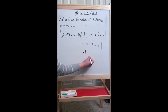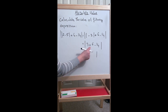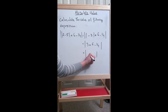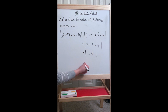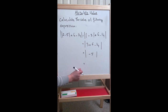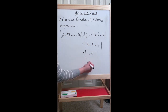We keep the outer absolute value and calculate the inside: 3 plus 6 is 9, minus 14 gives -5. Since -5 is negative, we take the absolute value and change it to its opposite, which is 5.